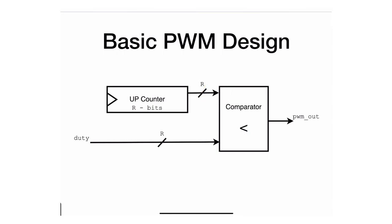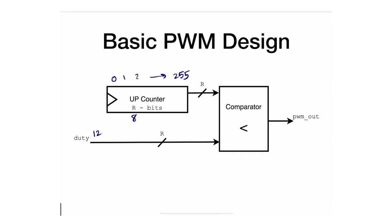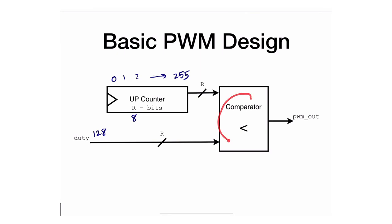Here's how the circuit works. Let's assume the counter is 8 bits, so it counts from 0, 1, 2, all the way to 255. You set some duty cycle value — let's say 128. The duty input is also R bits, the same size as the counter. As the counter counts 0, 1, 2, 3, 4, and so on, the comparator checks whether the count has reached 128.